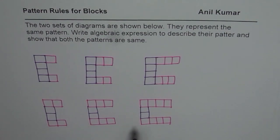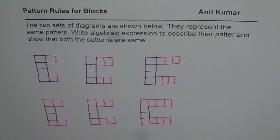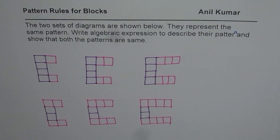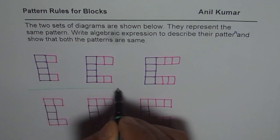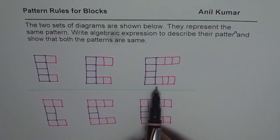What we have done here is we have taken two sets of similar patterns. The two sets of diagrams shown below represent the same pattern. The task is to write an algebraic expression to describe their pattern and show that both patterns are the same. We have two different-looking patterns, but they are kind of the same. The reason for shading them differently is to get different types of algebraic expressions to describe them.